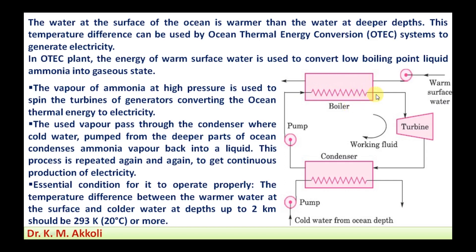The ammonia vapor at high pressure spins the turbine to generate electricity, converting ocean thermal energy into electricity. The used vapor is then passed to a condenser, where cold water pumped from the ocean depth is supplied, condensing the ammonia vapor back into a liquid.